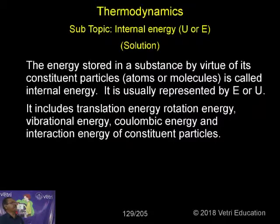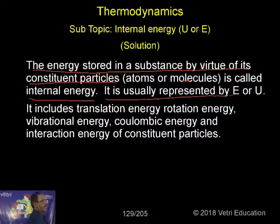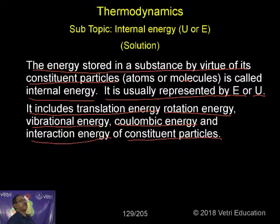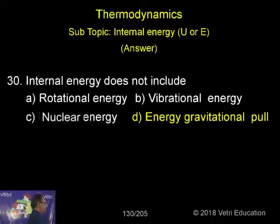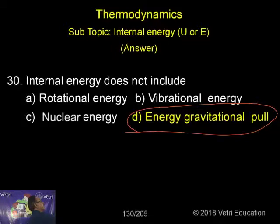What is internal energy? The energy stored in a substance by virtue of its constituent particles — atoms, molecules — is called internal energy. It is usually represented by E or U. It includes translational energy, rotational energy, vibrational energy, Coulombic energy, and the interaction energy of constituent particles, but not the gravitational pull. That is the important interpretation. So, internal energy does not include gravitational energy.